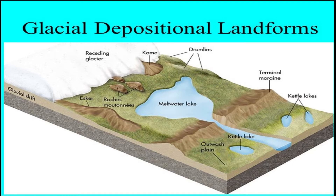The functions of glaciation in East Africa include: tourist attraction; hanging valleys form waterfalls which are a source of water for rivers — for example on Mount Rwenzori, the Mubuku River is important. Outwash plains provide fertile soils for agriculture. Glaciation also serves research and study purposes, and these areas are good sites for filming and photography.